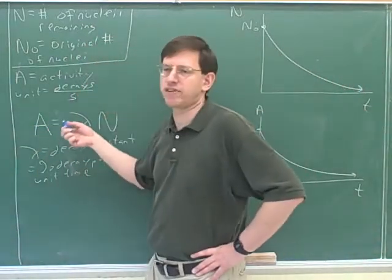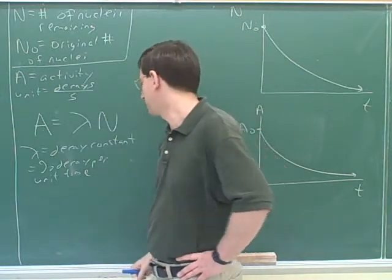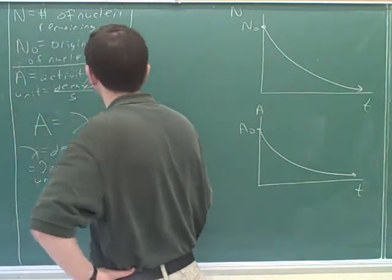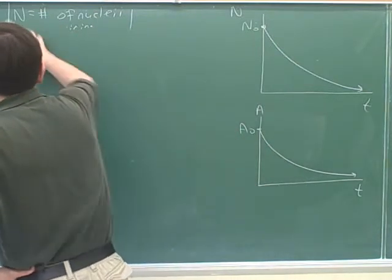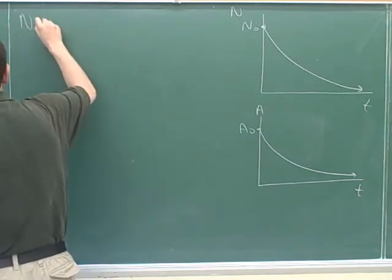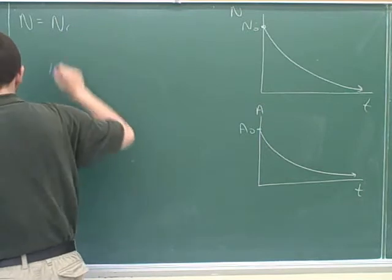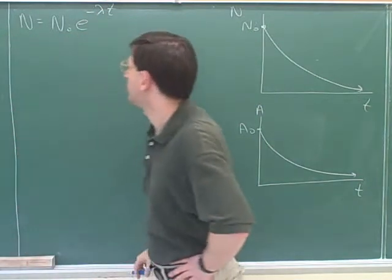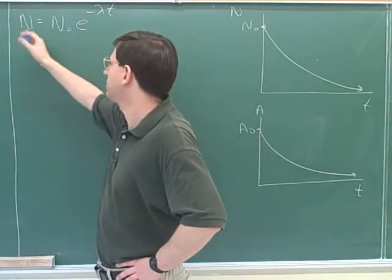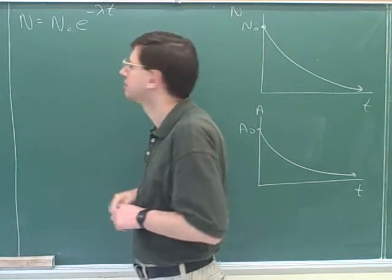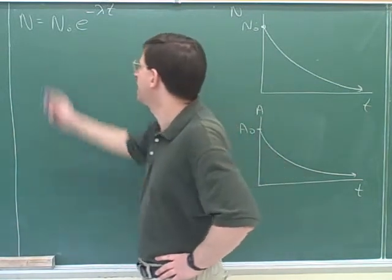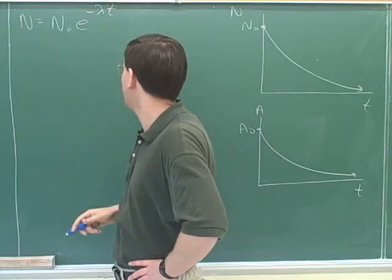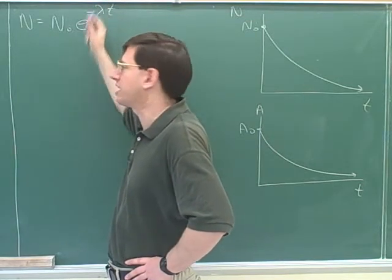And because these are proportional, any equation that works for A is pretty much going to work for N as well. The equations for A are going to have the same form as the equations for N. So here's an equation for solving problems with N. If you know the original number of nucleuses, you can use this to figure out how many nucleuses are left. Remember that N0 is the original number of nucleuses. N is how many nucleuses are left. Lowercase t is how much time is elapsed. We just saw that lambda is the decay constant. It tells us what percentage are decaying per unit time.